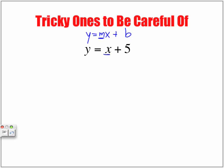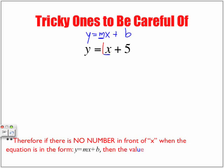There is, but we don't really write it. It's not considered proper math. And in fact, the value in front of X really is 1. So, thing to note, if there is no number in front of X when the equation is in the form Y is equal to MX plus B, then the value of the slope is 1.